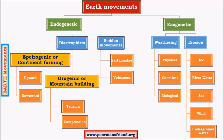In today's video we'll be discussing various topics that come under earth movements. Earth movements are mainly divided into endogenetic movements and exogenetic movements — that is, movements that take place within the earth's surface and movements that take place above the earth's surface. In endogenetic movements we'll see diastrophic movements and then sudden movements.